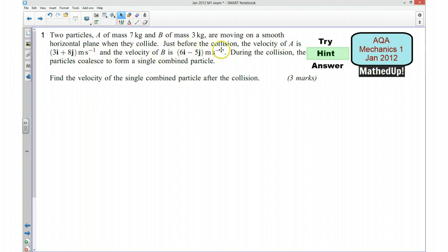Just before the collision, the velocity of A is 3i plus 8j meters per second and the velocity of B is 6i take away 5j meters per second.